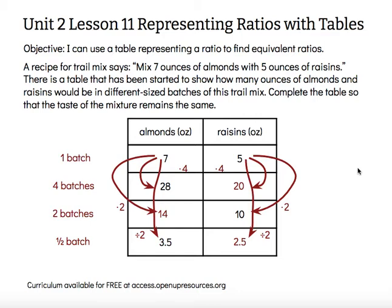The objective says: I can use a table representing a ratio to find equivalent ratios. I'm able to move up and down the table as I need by thinking about how many times bigger or smaller each of these parts is, considering how many batches I'm making — am I doubling, quadrupling, halving, etc. Thanks for watching!